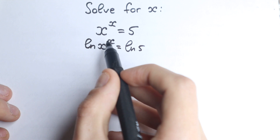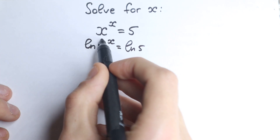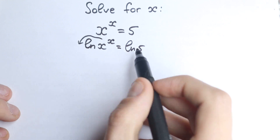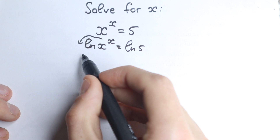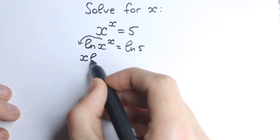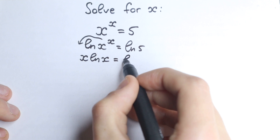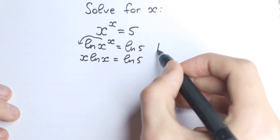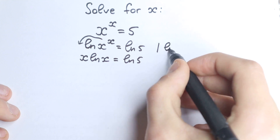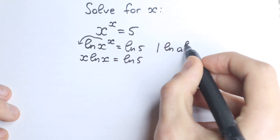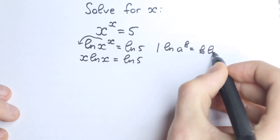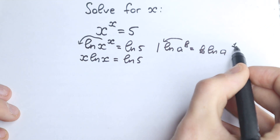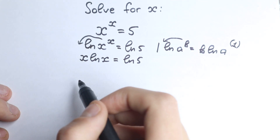Why do I do this? Because right here this x jumps out of the exponent, and it's really great because now we have a product, not a power. So we have x times natural log x equal to natural log 5. The rule is: natural log of a to the power b equals b times natural log a. This is a really important rule — and this is the first trick. Now let's go to the second trick.